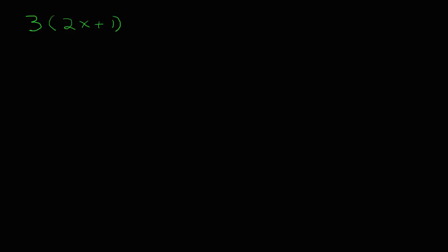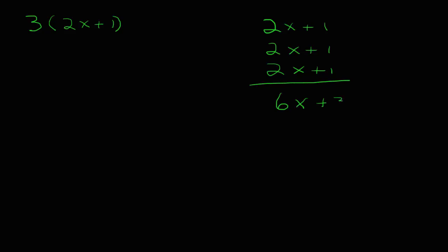Let's take a look at what that means from a pictorial representation. I have 2x plus 1, but I have it three times: 2x plus 1, 2x plus 1, 2x plus 1. So all together, when I combine my like terms, I have six x's plus 3.